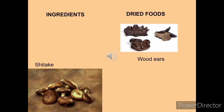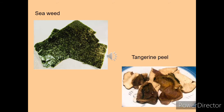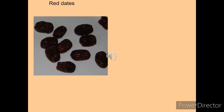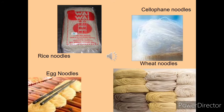Now we'll talk about some of the key ingredients. Wood ears, shiitake mushrooms, dried chilies and dried shrimp are commonly used. Chinese people eat lots of types of food — seaweed and tangerine peel can also be found in their food. Red dates are very famous in western China. Lotus leaf, lotus root and lotus seeds are also used. Lotus leaf is used to wrap different chicken items which are generally baked in some parts of China.